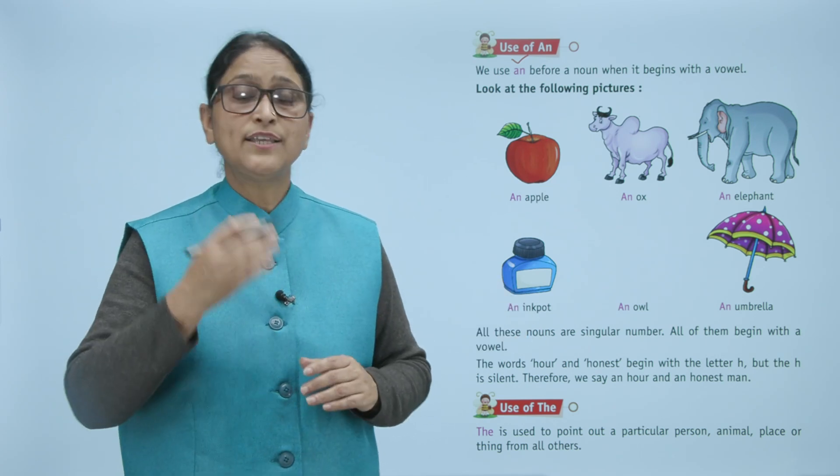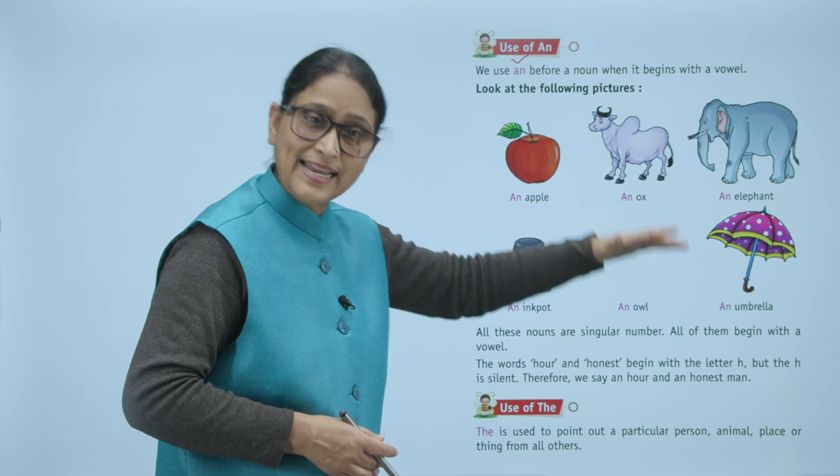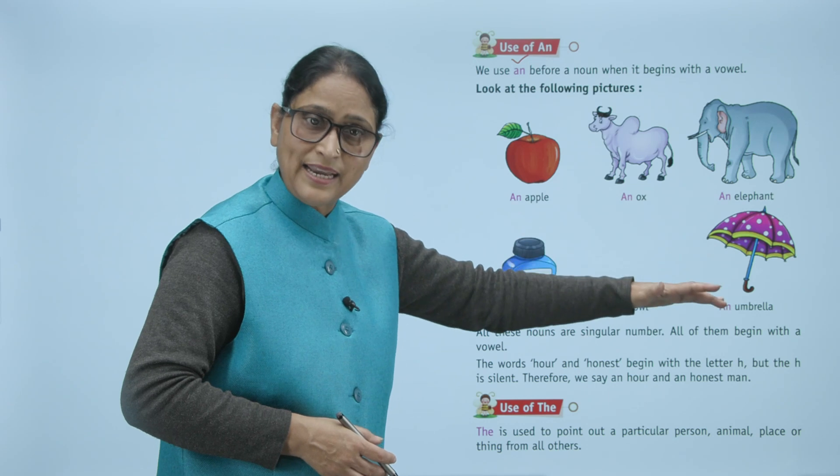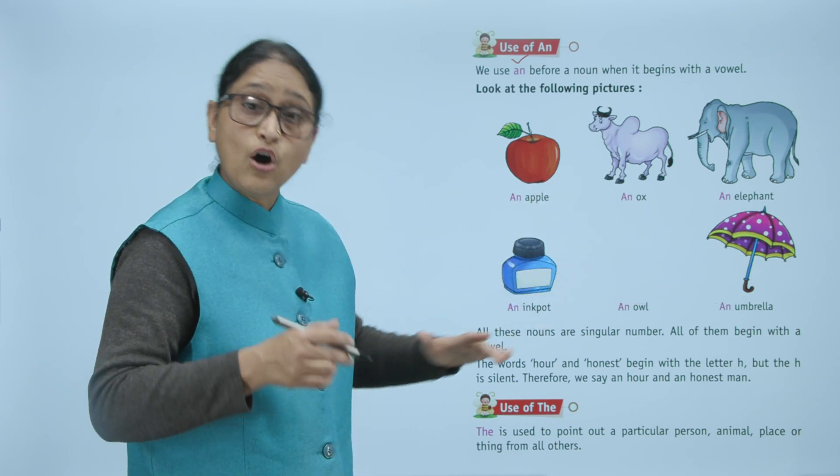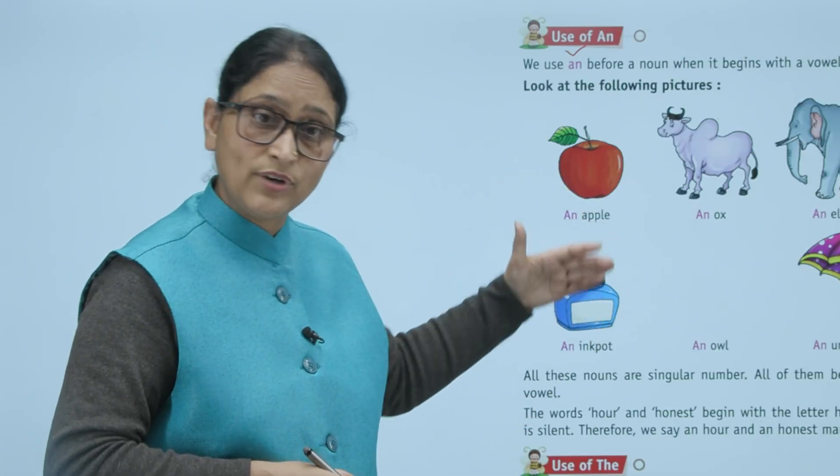Now look at the following pictures: an apple, an ox, an elephant, an inkpot, an owl, an umbrella. All these nouns are singular number. All of them begin with a vowel. Jitne bhi hain, sari singular mein hain aur kis se shuru ho rahe? Vowels se.